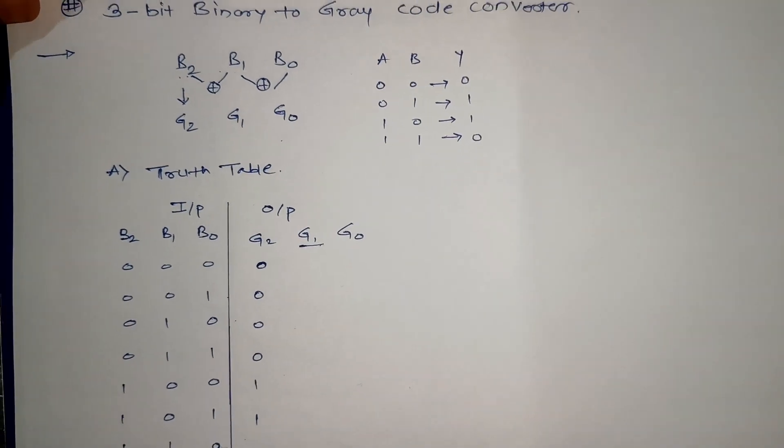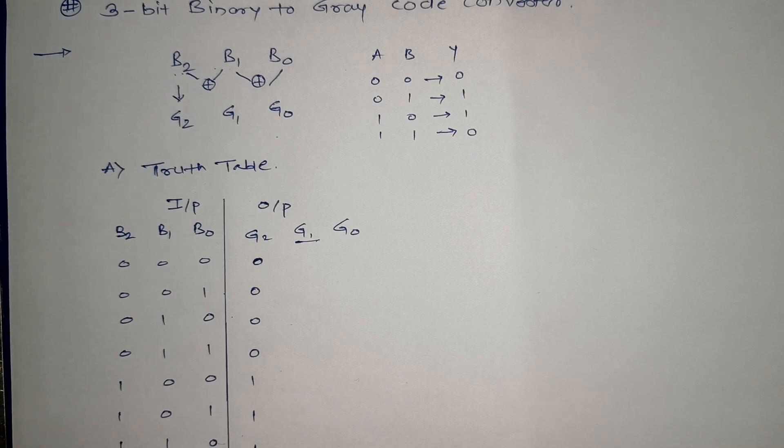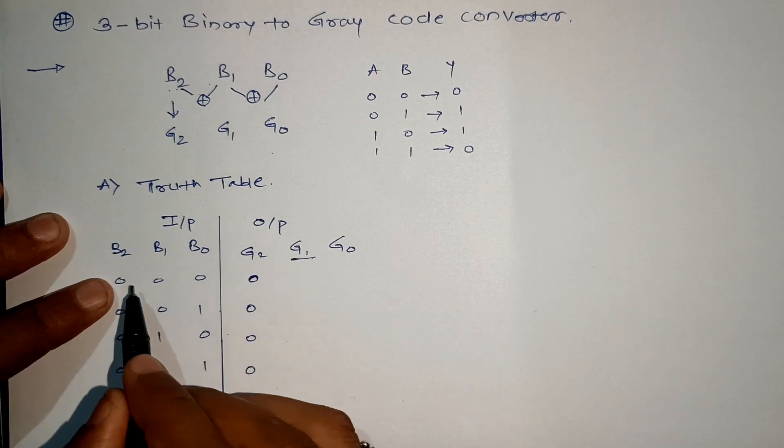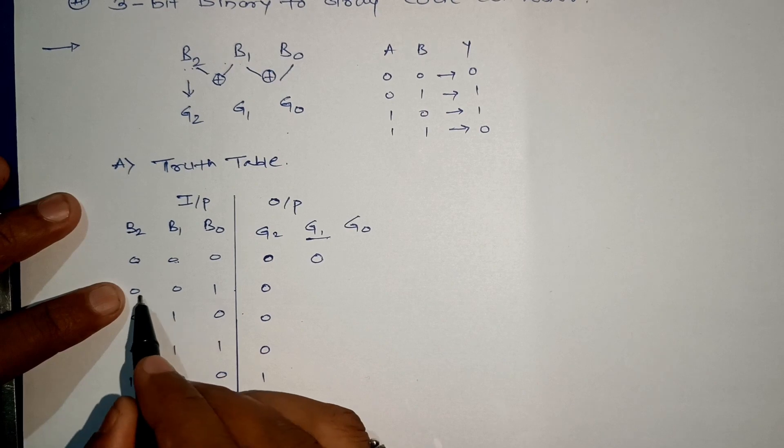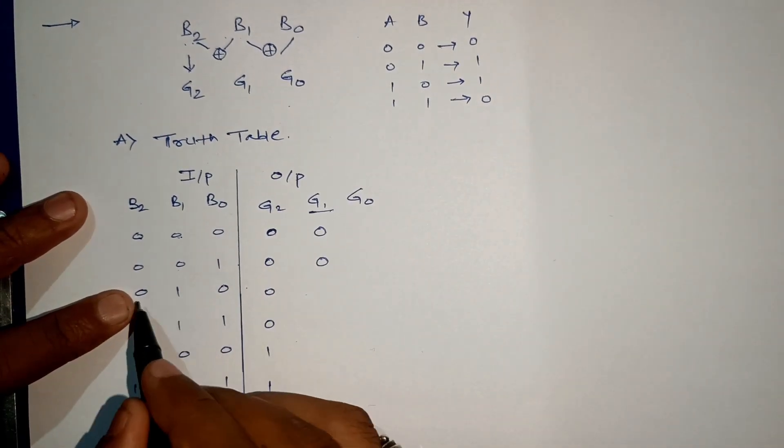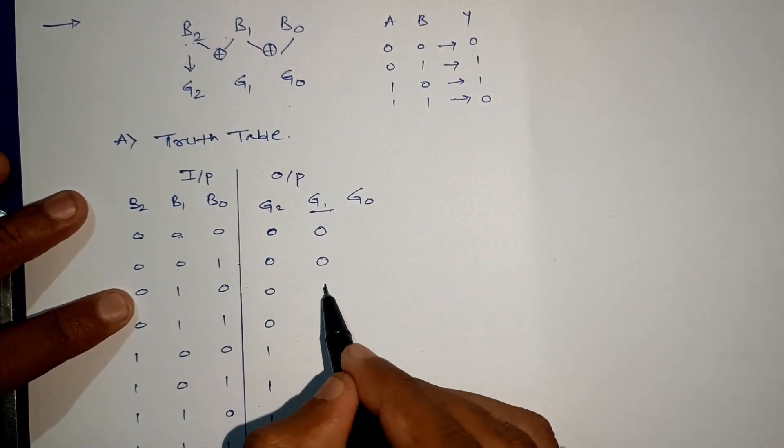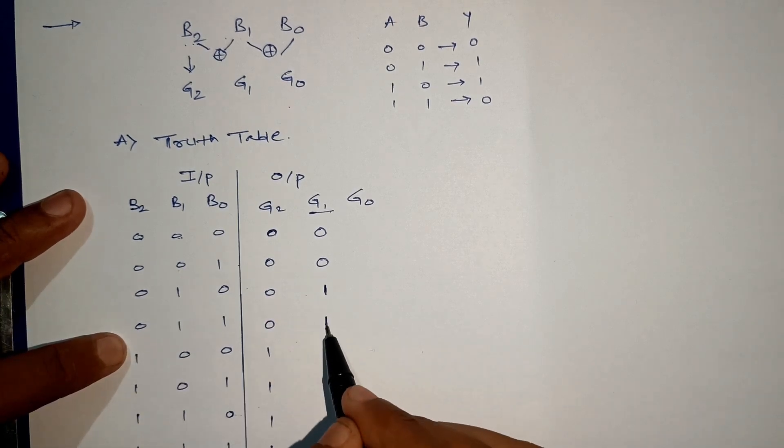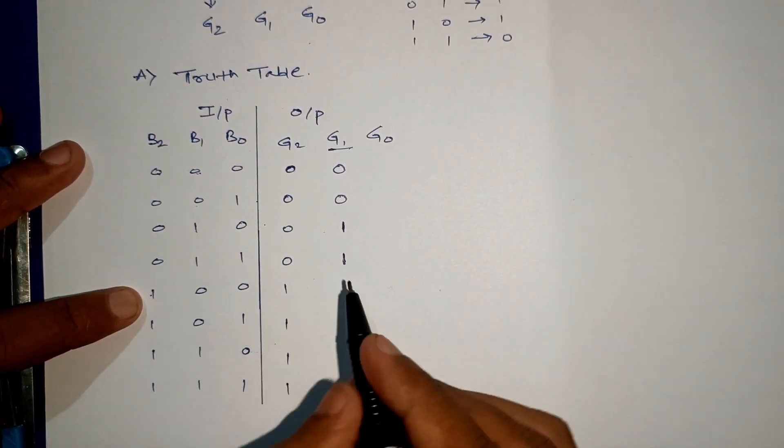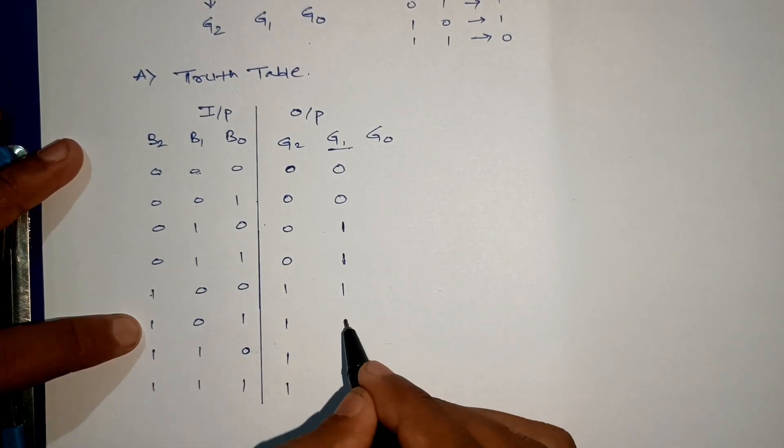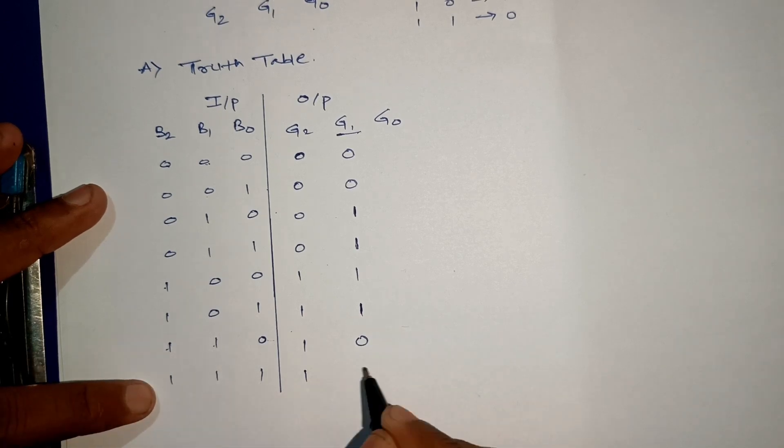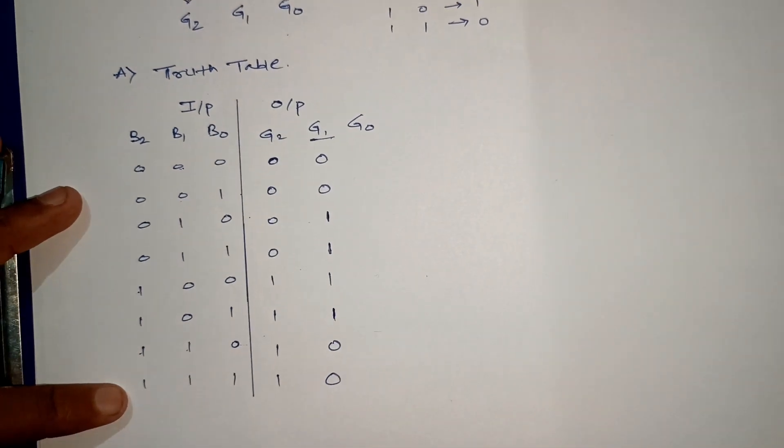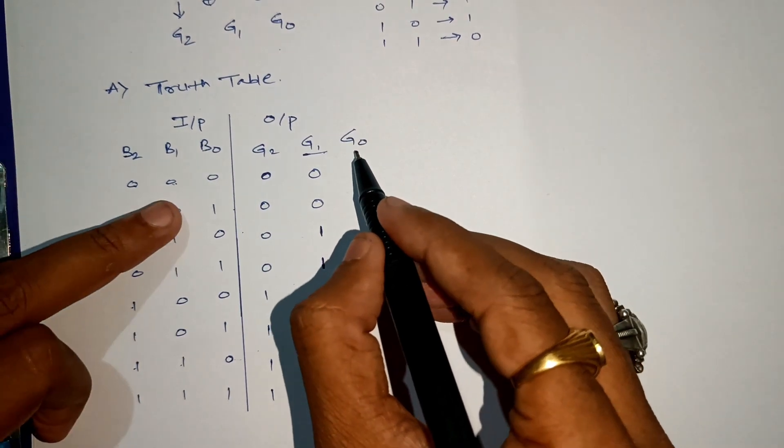Let's go for G1: B2 XOR B1. 0 XOR 0 will be 0, 0 XOR 1 will be 1. Coming to this point, 1 XOR 0 will be 1, and 1 XOR 1 will be 0. So we got G1.